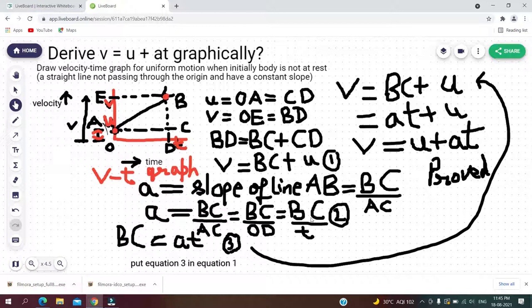So acceleration a is equal to BC upon t. This is our equation 2. And now how to find out BC? If you take this t on the left side, BC will become equal to a multiplied by t, acceleration into time. This is equation 3.